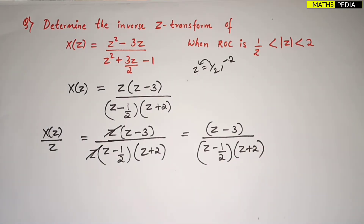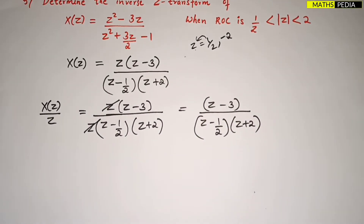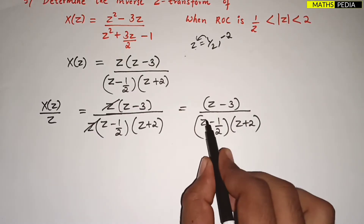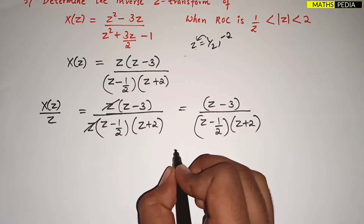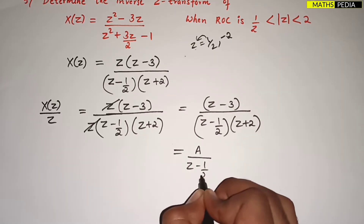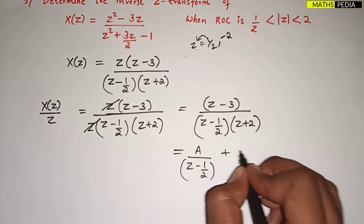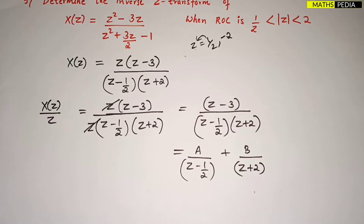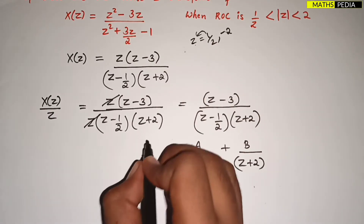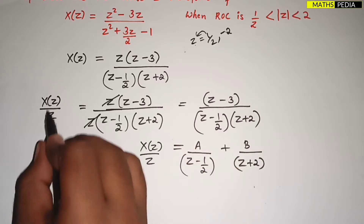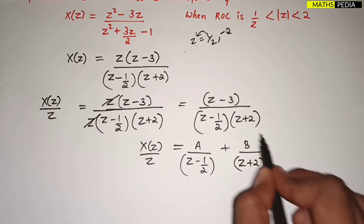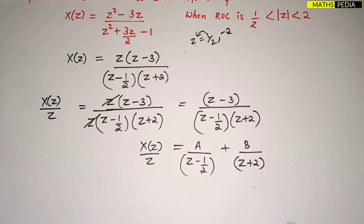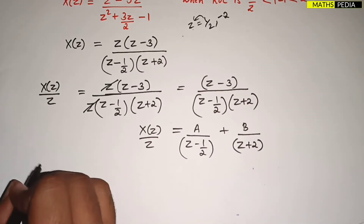The next step is to apply the partial fraction method. Since the denominator has linear factors, write X(Z)/Z = A/(Z - 1/2) + B/(Z + 2). We now need to find the values of A and B.